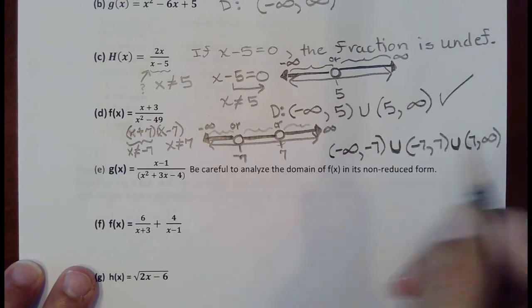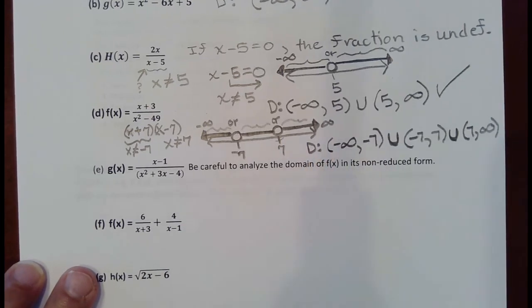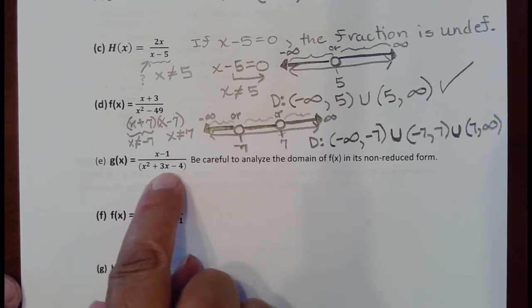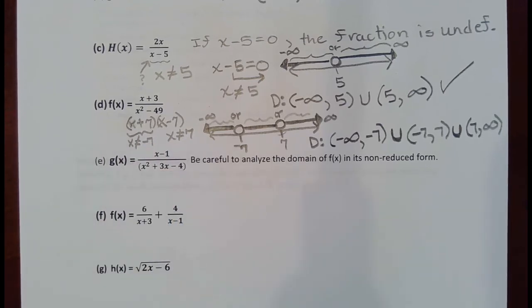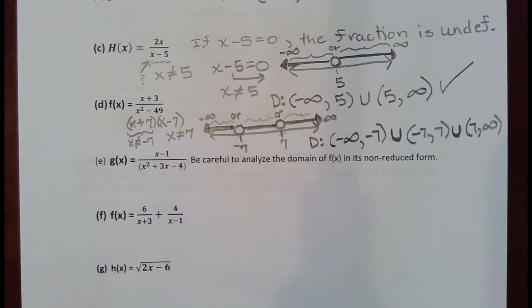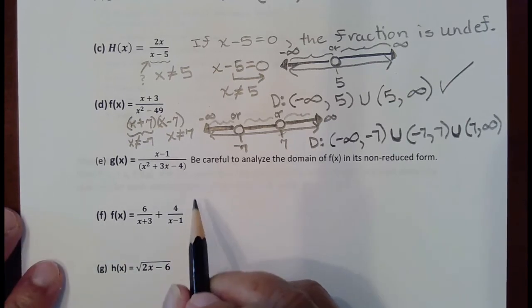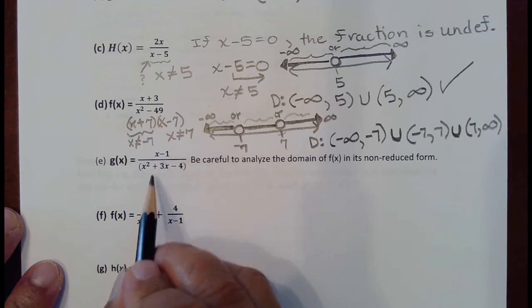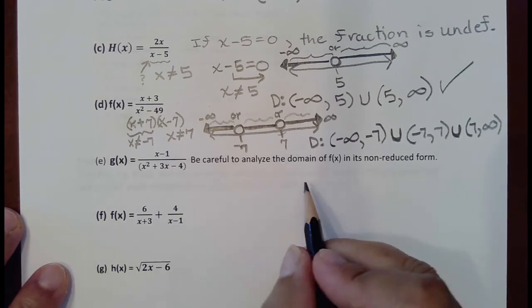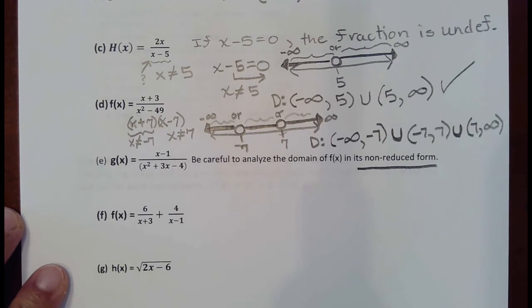In part E, I selected this problem because students often make a mistake: after factoring the denominator, if a factor matches something in the numerator, students cancel them and then improperly state the domain. Important note: do not cancel first and then state the domain. State the domain in its non-reduced form.